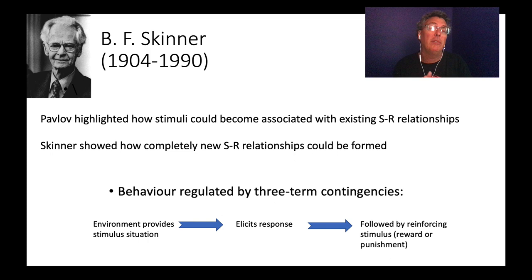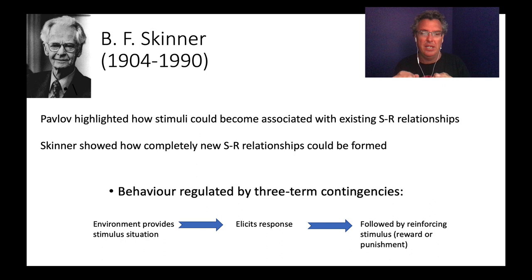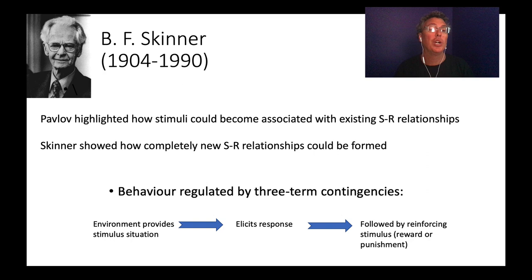In real life, this explained things like how a dog could begin to anticipate food just when a person walked into the room. Pavlov's theory showed how behavior could become more complex — it's not always a direct response to an eliciting stimulus, a UCS. Behavior can generalize to other stimuli that predict it, going beyond the simple 'food in my mouth, I drool' response.